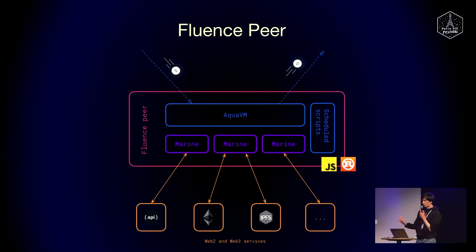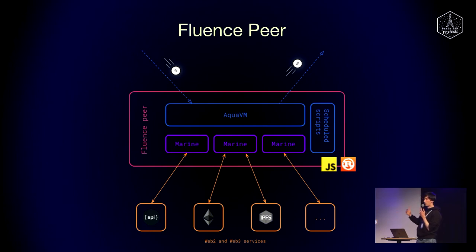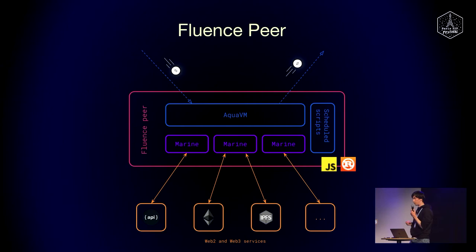There are two implementations of the Fluence peer: JavaScript and Rust. They are a little different because JavaScript is designed to work in the browser, has less flexibility in terms of network connectivity, and always connects via a relay node, which is any full-featured Fluence node on the network. The Rust peer is more of a back-end node, but they are designed to be as close and identical as possible.